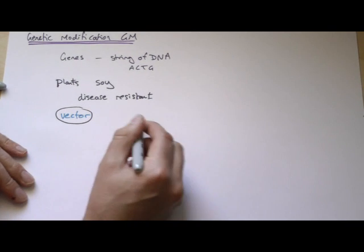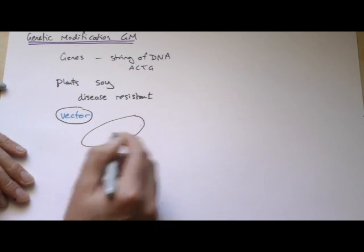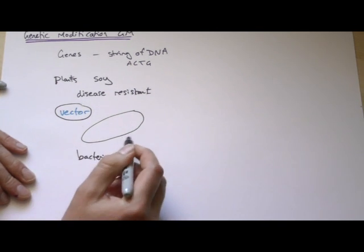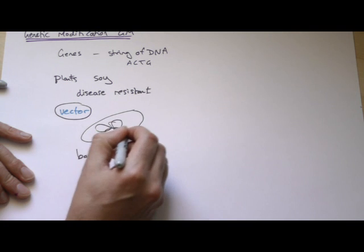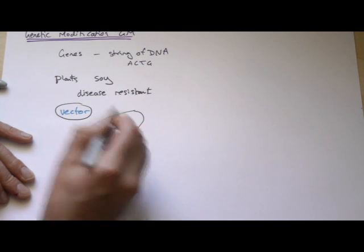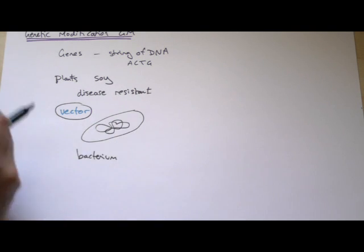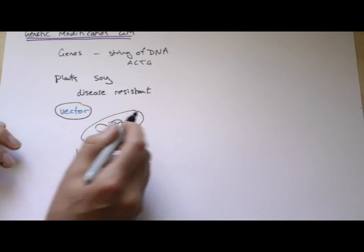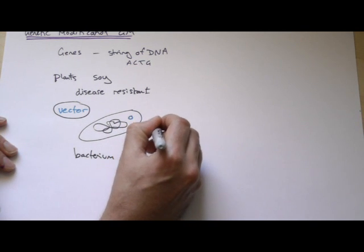And the ones that we'll be interested in, here's a bacterium. Bacteria have a big long loop of DNA inside. They don't have a nucleus as such. It's just one big long loop of DNA. But they also have these smaller loops called plasmids. And it's the plasmids that are going to be used as the vectors.